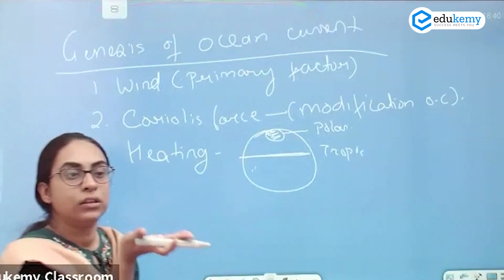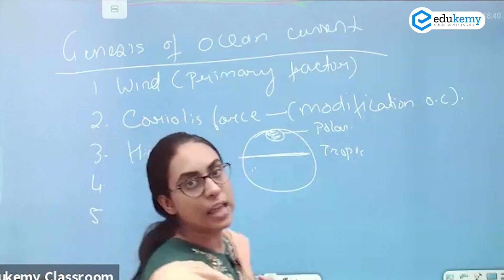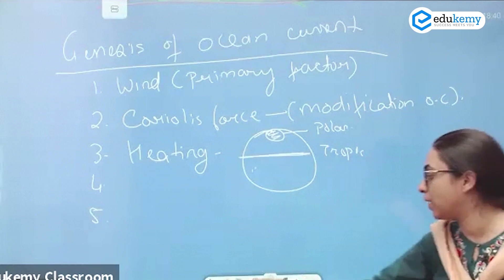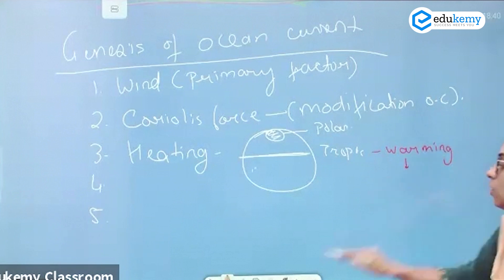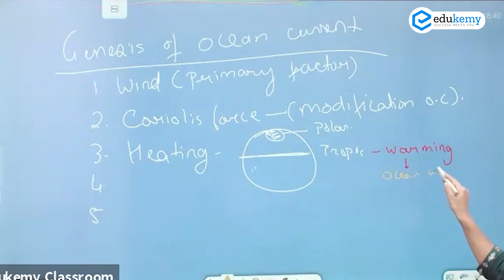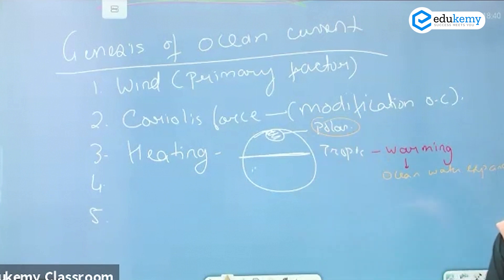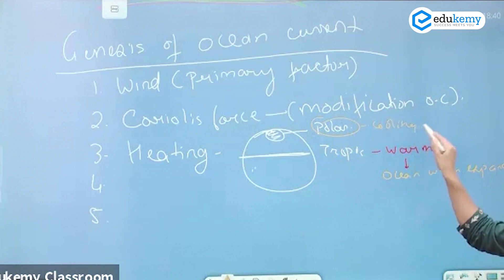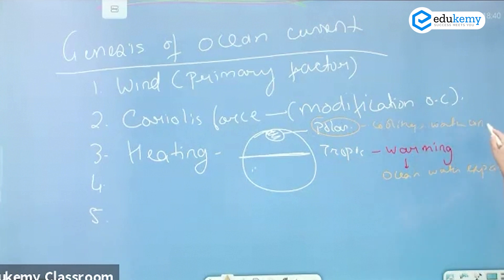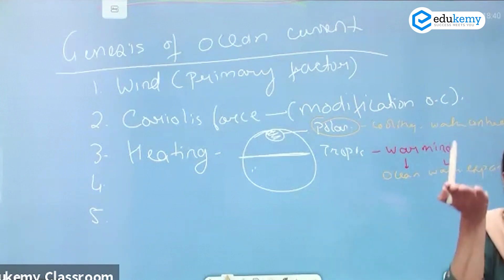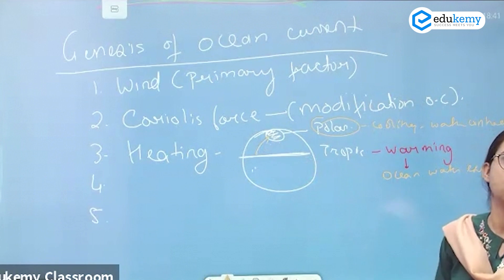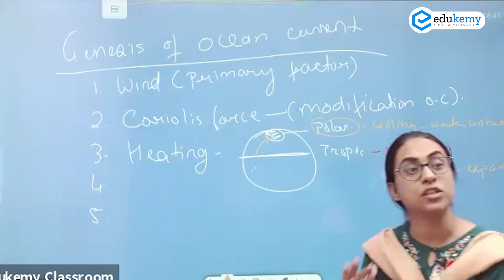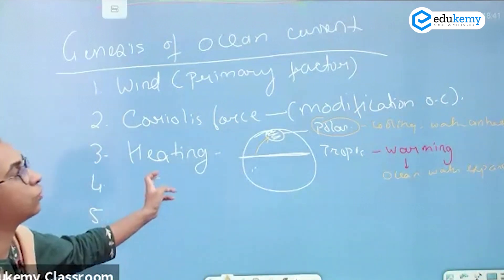When there is more heating in the tropics, the water will expand — liquids expand when they are heated. So at the tropics there is more warming and the ocean water expands. In contrast, in the polar areas there is cooling and the water contracts. The flow then goes from the high area to the low area, so the water flows from the tropics towards the poles. Heating is also responsible for the generation or modification of ocean currents.